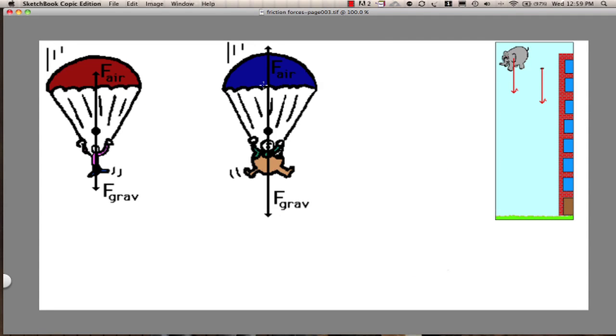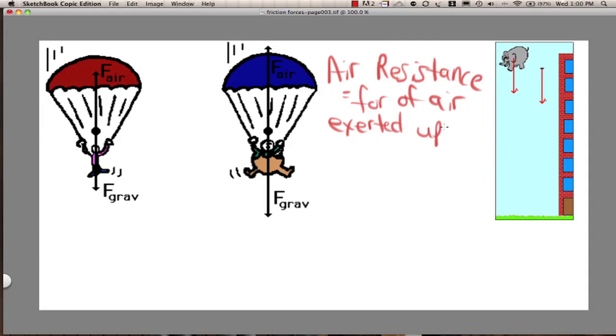One of the things that opposes falling objects is the upward force of air, and we label this air resistance. Air resistance is equal to the force of air exerted upward on a falling object. We also have air resistance horizontally, and we call that drag.